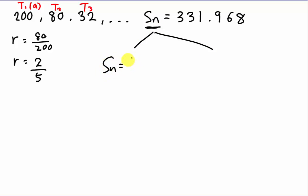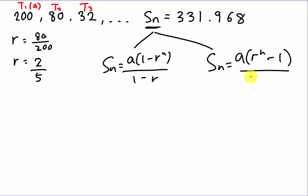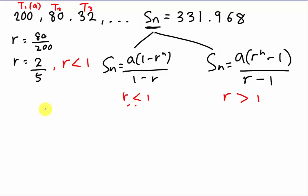One formula is Sn equals A times (1 minus R^n) over (1 minus R). The other formula is Sn equals A times (R^n minus 1) over (R minus 1). Both formulas are correct. You use the first one when your R value is less than 1, and the second formula when your R value is greater than 1. In this case, R is 2 over 5, which is 0.4, so R is less than 1, and we use the first formula.